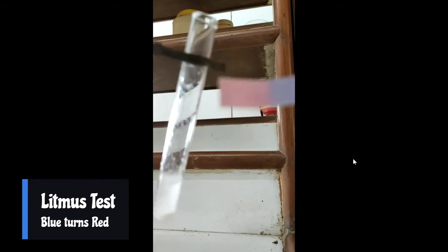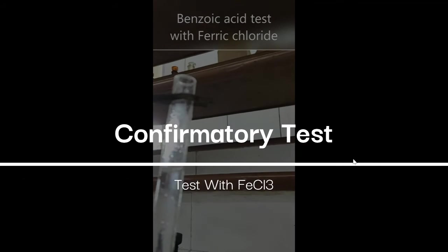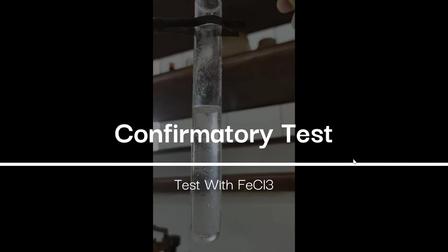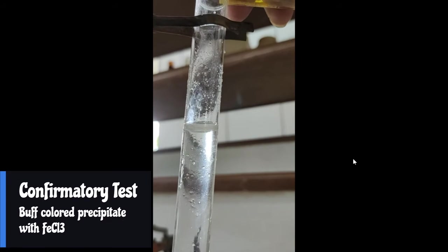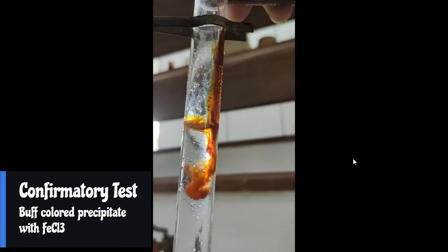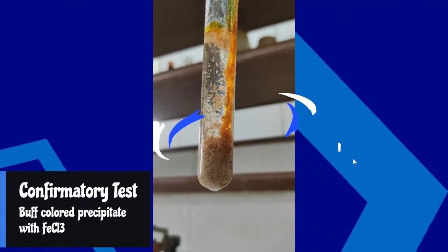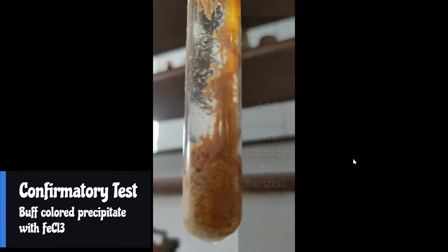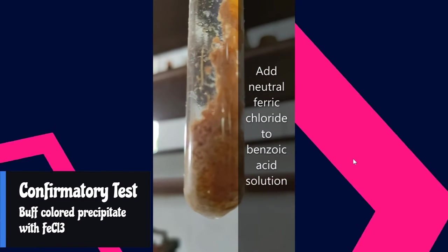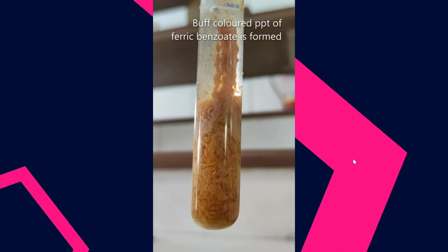If that blue turns red, that surely confirms that the compound is acidic. Now you have confirmed the acidic nature; we have to confirm whether it is benzoic acid or not. So add a neutral FeCl3 solution to it. As you can see here, a beautiful buff colored precipitate will be observed. This brown or buff colored precipitate confirms that the compound has to be benzoic acid solution.